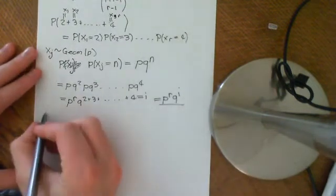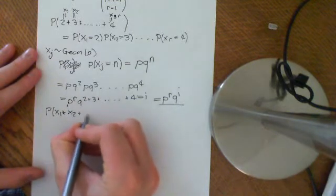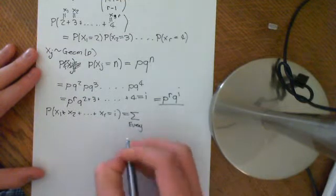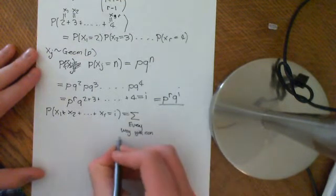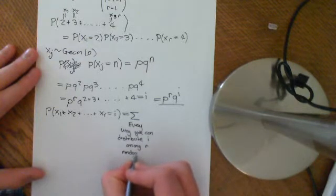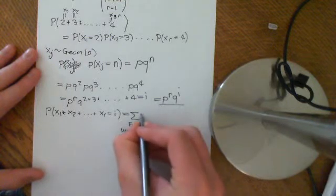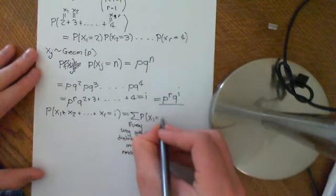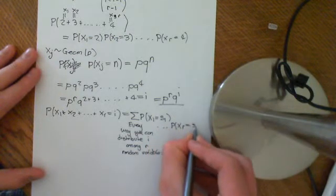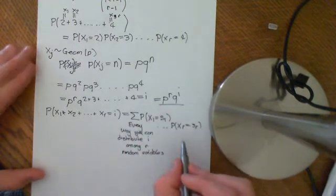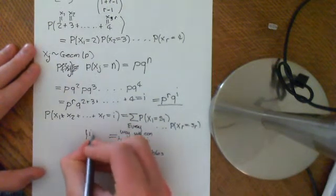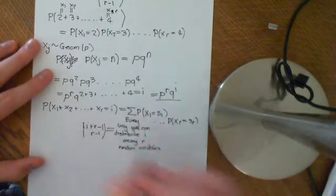Okay, so now we can say that the probability that x1 plus x2 plus all the way up to xr is equal to i is equal to the sum over every way you could distribute the i biscuits, every way you can distribute i among r random variables. So every possible way of the probability of those specific values. But we've shown that the number of ways, the number of possible combinations is equal to i plus r minus 1, choose r minus 1, firstly, so that's interesting.